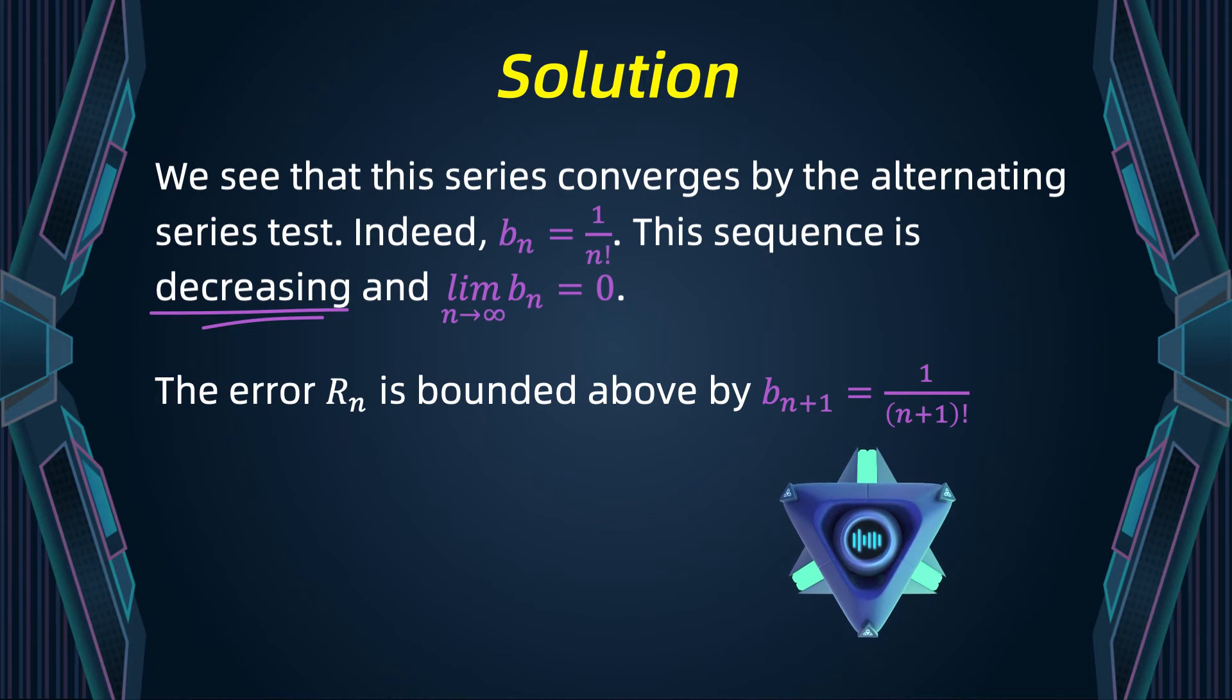To do that, we can manually compute b1, b2, b3, b4, b5, b6, b7, etc., until bn plus one is small enough.